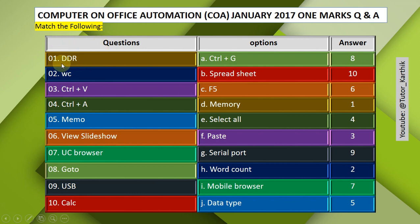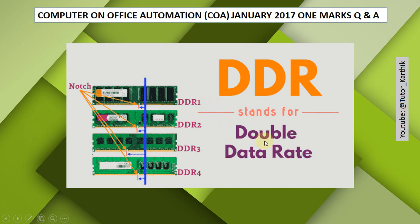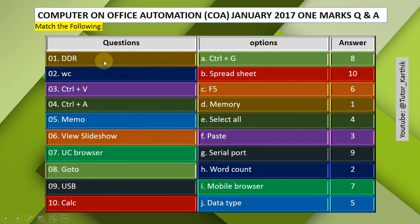Match the following. Question 1: DDR — Answer: D, Memory. DDR stands for Double Data Rate; it is a type of memory. Question 2: WC — Answer: H, Wait Count.